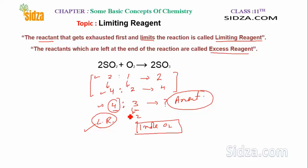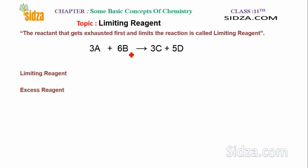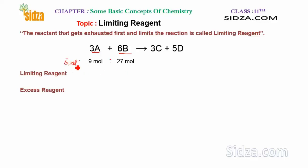Let's understand this with an example. In the balanced equation A + B gives C and D, the balanced ratio requires 3 moles of A and 6 moles of B, so the molar ratio A:B is 3:6. If I instead mix 9 moles of A with 27 moles of B, I need to find the limiting reagent. We compare ratios: the balanced equation ratio is 3/6 = 0.5, and the experimental ratio is 9/27 = 0.333.